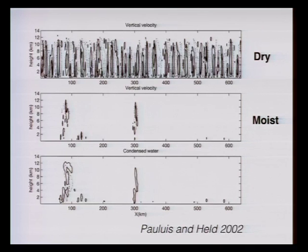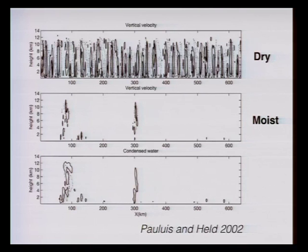So instead of a dominant single scale, we have highly multi-scale, highly turbulent, and intermittent behavior — which is what we deal with in the real world. And it's all because of water vapor. If water vapor weren't around, our work would have been done many years ago. Maybe it's a good thing we have water vapor because it gives us a job. It makes the system much more interesting and complicated, and it means we have to think harder about what we mean by convection.